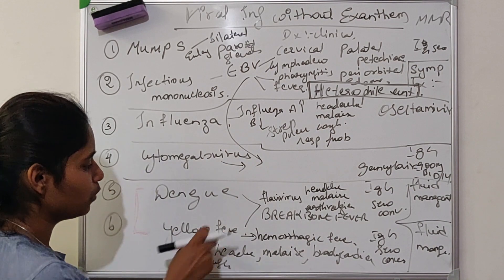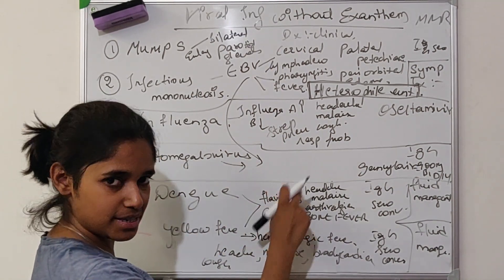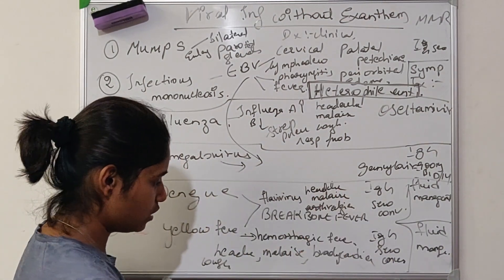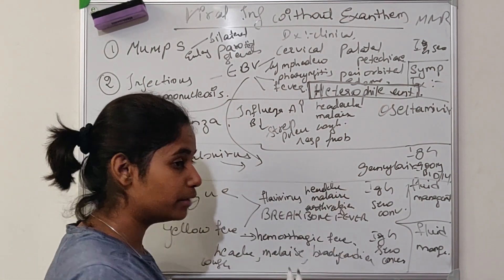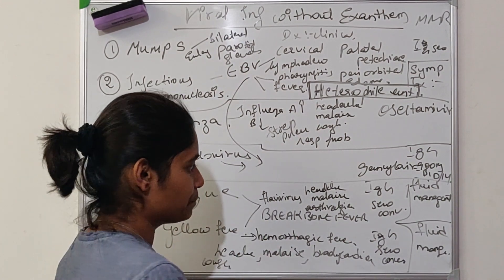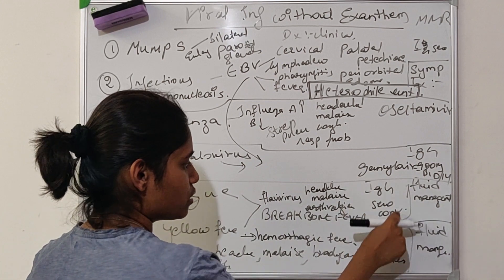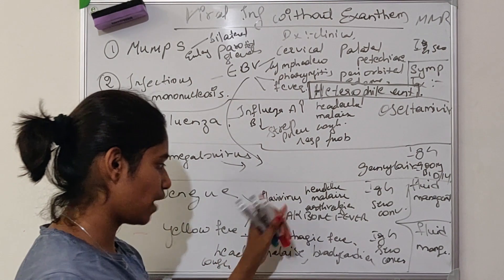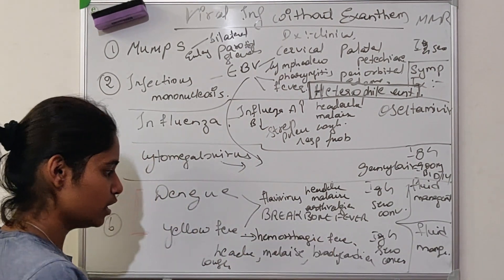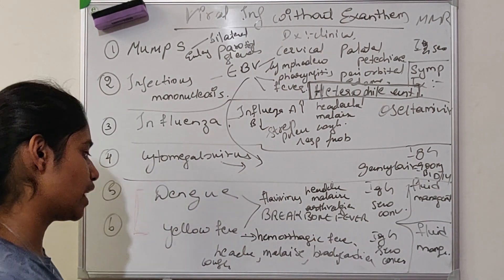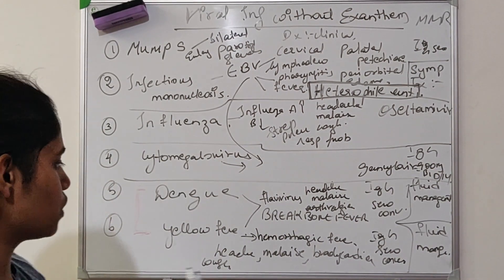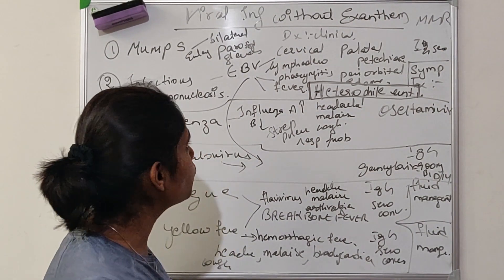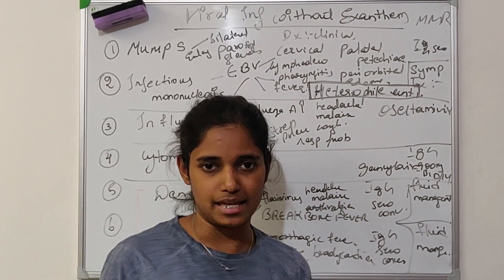Dengue and yellow fever are both caused by Flavivirus, present in stagnant water. Dengue symptoms are headache, malaise, and arthralgia — breakbone fever, with pain even on moving the eyes. Diagnosis is IgG seroconversion; treatment is fluid management. Yellow fever is a hemorrhagic fever with headache, malaise, bradycardia, and cough. Diagnosis is IgG seroconversion; treatment is fluid management. Those were the viral infections without exanthem.